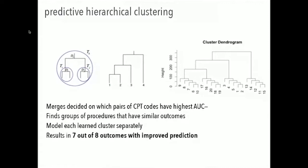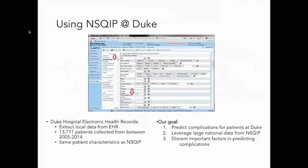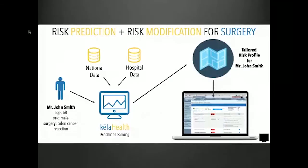We also looked at combining this with our own electronic health record data. A patient comes in to get surgery, and we'd like to combine this national data with our local hospital data — to do transfer learning between the national database and our local hospital data — in order to come up with a risk profile tailored for that individual patient. Then we'd like to show their provider that uniquely tailored risk profile.